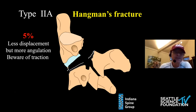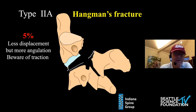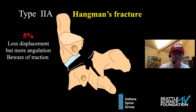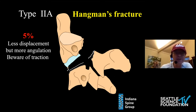There is a type 2a Hangman's fracture that has less translational displacement but significant angular displacement due to the complete disruption of the C2-C3 disc space, and these are notoriously extremely unstable.